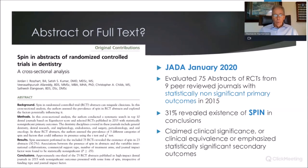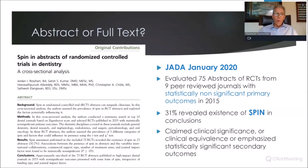Do we read the abstract or the entire article? I was an abstract reader for years, but we're missing a lot if we don't go to the full text. A study — 'Spin in Abstracts of Randomized Control Trials in Dentistry,' from JADA January 2020 — looked at 75 abstracts from nine peer-reviewed journals where the primary outcomes were statistically non-significant. Thirty-one percent of the time there was spin in the conclusions: either claiming clinical significance not supported by the primary outcome, or emphasizing a significant secondary outcome that wasn't actually the focus of the study.